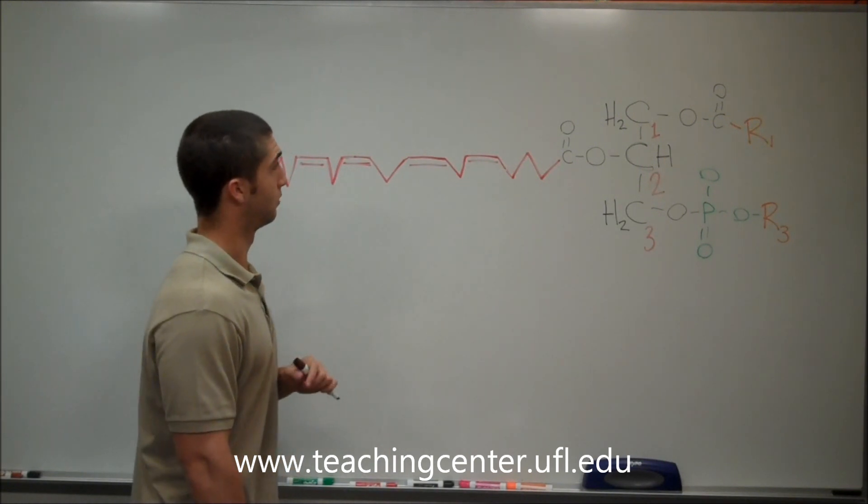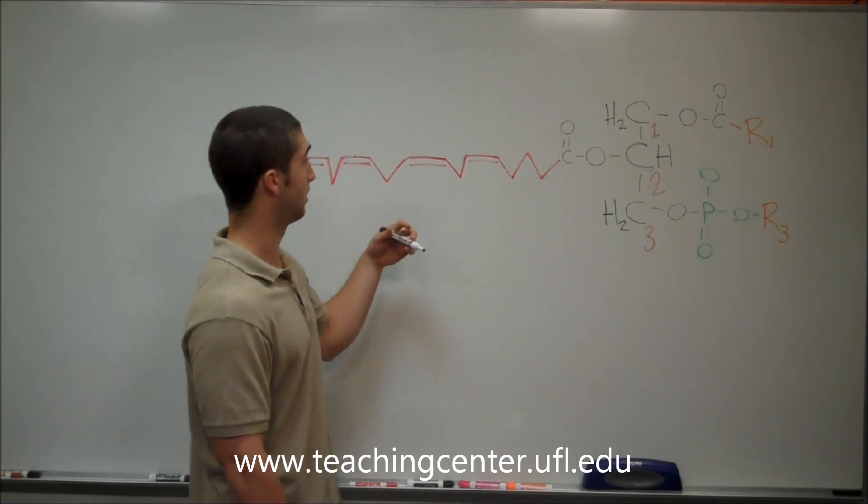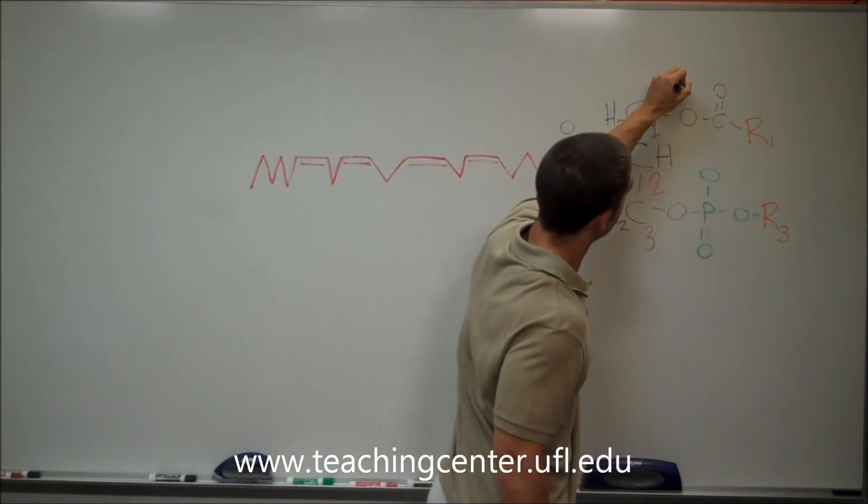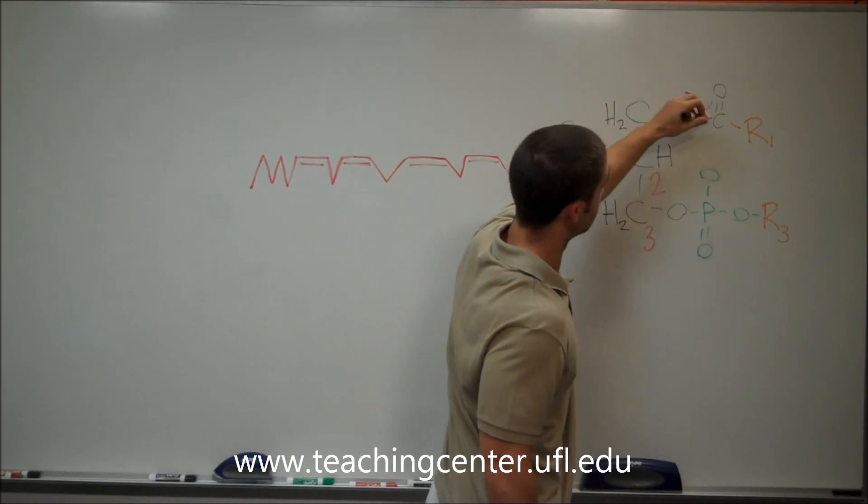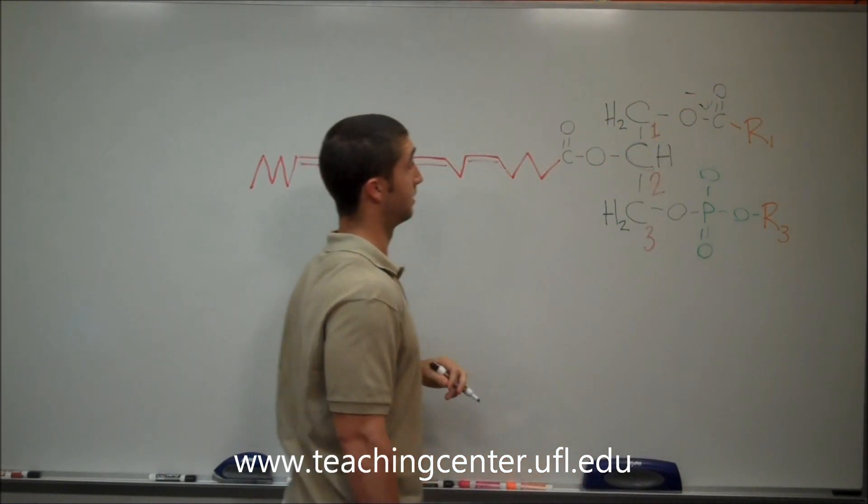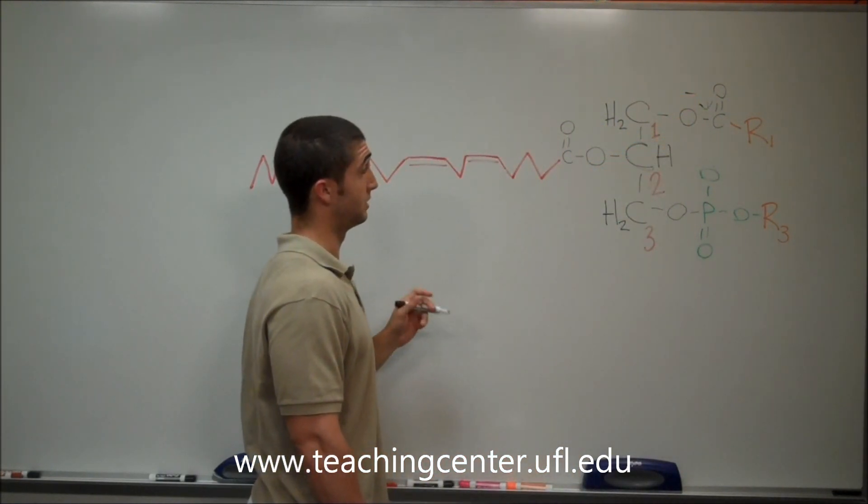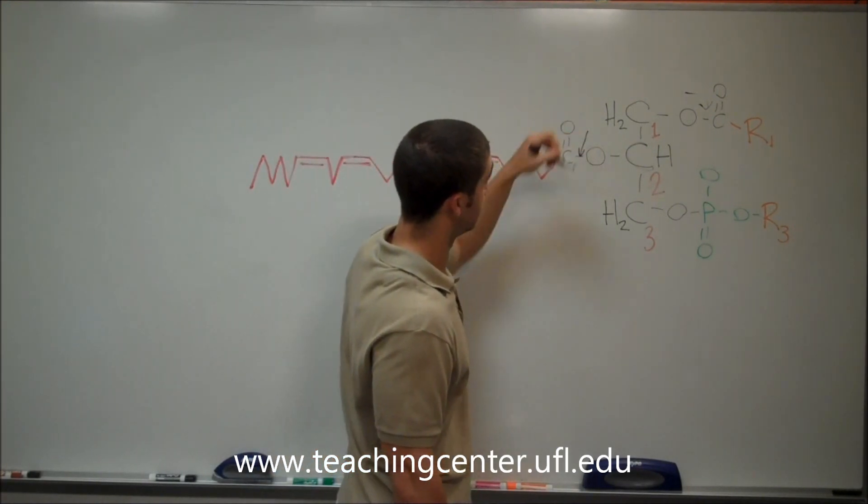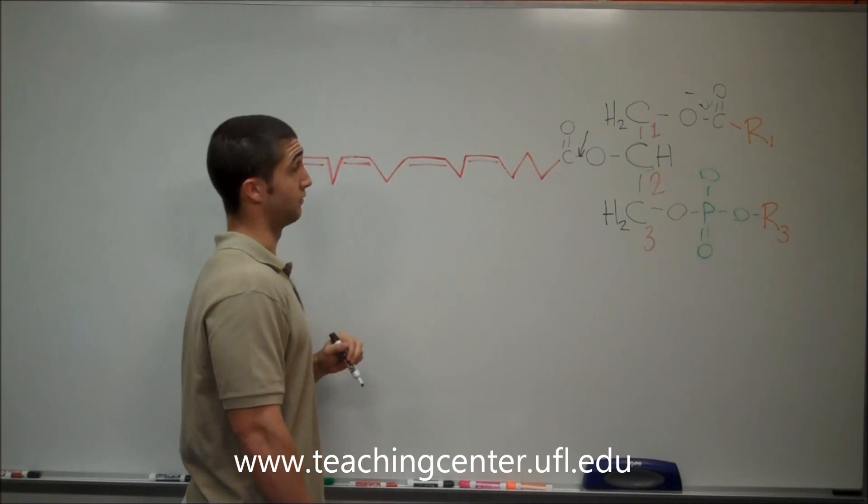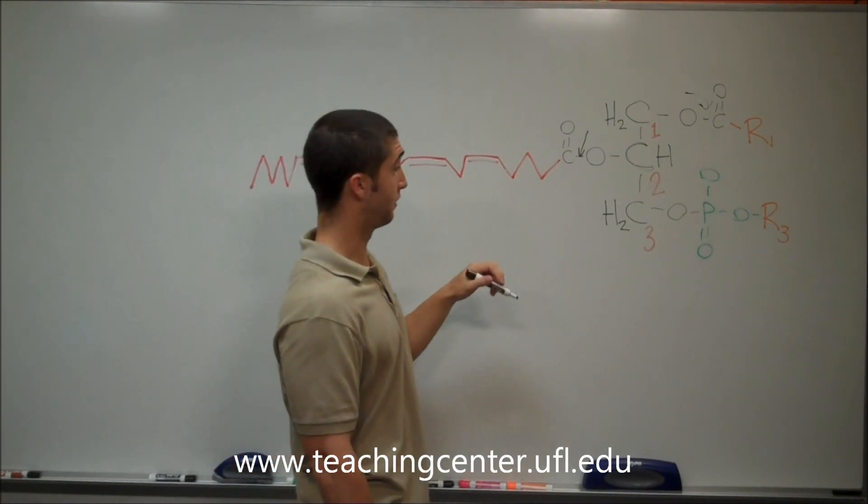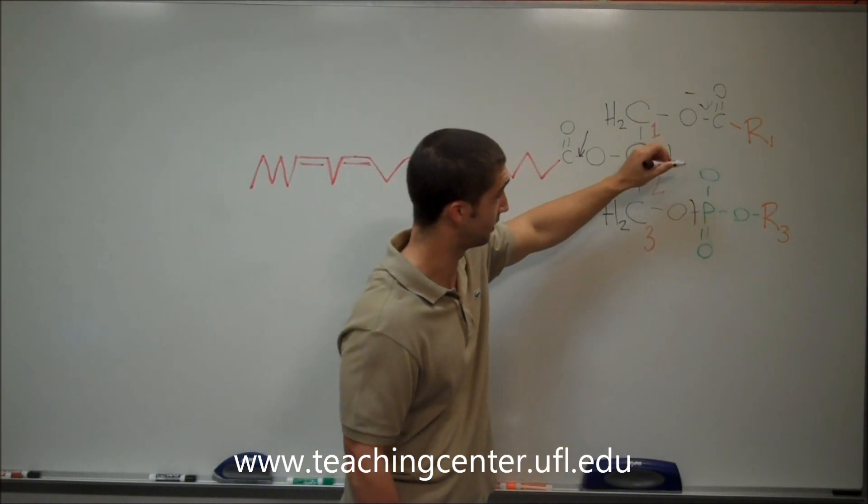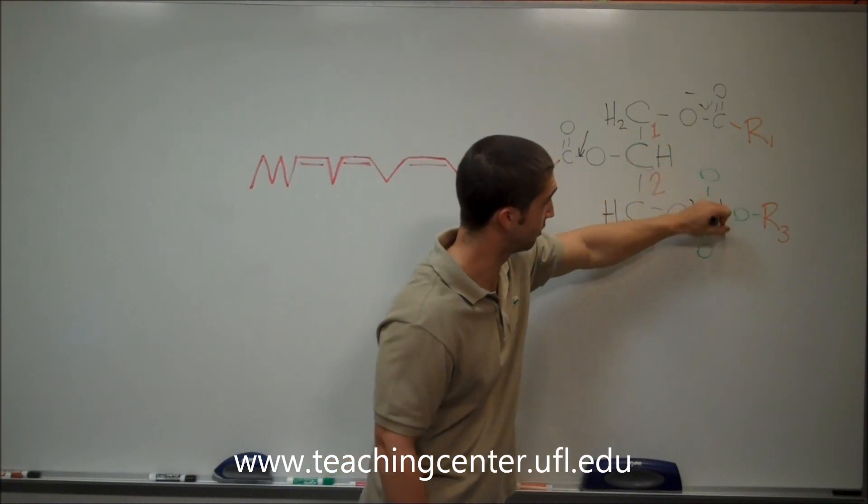The reason is because phospholipase A1 breaks this ester bond right here from the first carbon, releasing that fatty acid. Phospholipase A2's job is to break this ester bond right here, releasing the fatty acid from carbon number two. Phospholipase C breaks before the phosphate, and phospholipase D breaks after the phosphate.